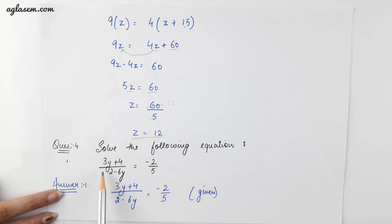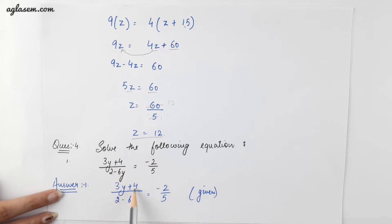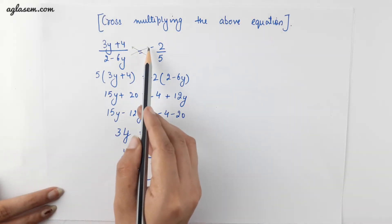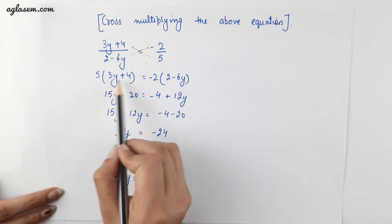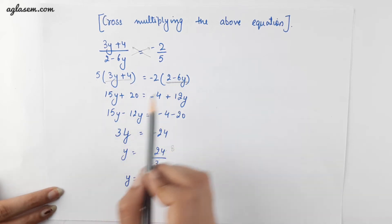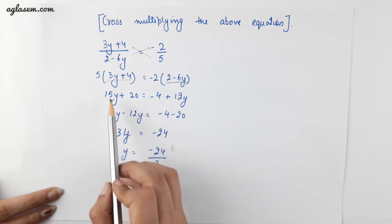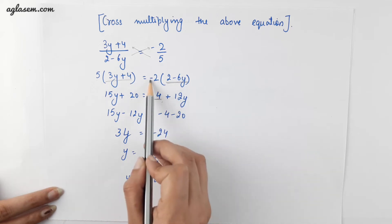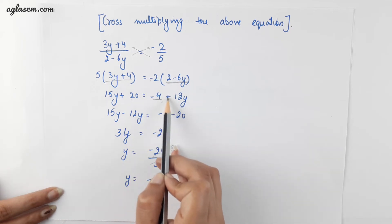Similarly in question number 4, we have to find the value of y by solving the following equation: (3y plus 4) upon (2 minus 6y) is equal to minus 2 by 5. By doing the cross multiplication method we will get 5 into (3y plus 4) and minus 2 into (2 minus 6y). Solving the equation we will get 15y plus 20 minus 4 plus 12y, since minus into minus gives plus.